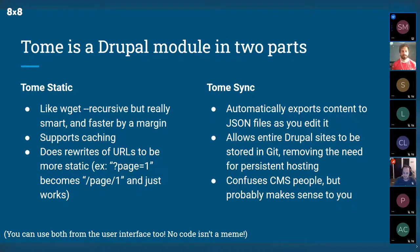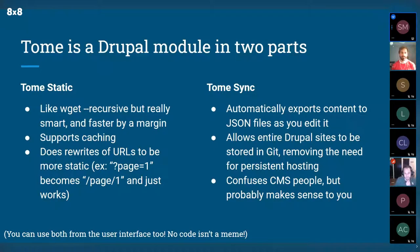Tome comes in two parts. The first is Tome Static — the static site generator. It's basically like wget recursive, but it's a smarter crawler that runs within the CMS instead of making external HTTP requests. It supports caching, so when you rerun a build it only generates uncached pages. The clean build is slow, but every build after that is super fast. It also rewrites pages for static compatibility — for example, query parameter pagination like ?page=1 gets rewritten to /page/1.